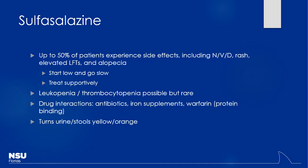A significant number of patients will develop side effects with sulfasalazine — nausea and vomiting to be expected. Watch LFTs and monitor for alopecia. You start with lower doses and titrate up to see what they can tolerate. Leukopenia or thrombocytopenia is possible but pretty rare compared to methotrexate. Be aware of drug interactions — iron supplements or antibiotics can be bound up, and there's a potential interaction with warfarin. Also, it's going to turn your urine and stool yellow or orange — let patients know that, because otherwise they might think something is wrong.